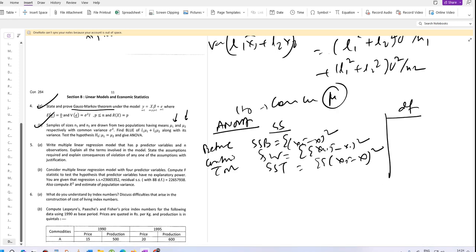Degrees of freedom is k minus 1, N minus k, and if you add it, N minus 1. MS is MSB which is nothing but SSB by degrees of freedom.